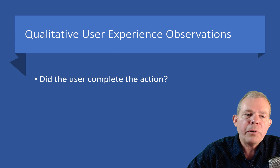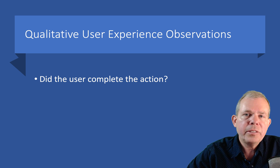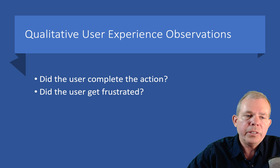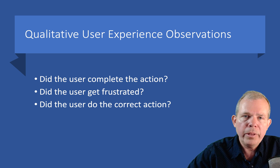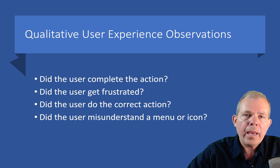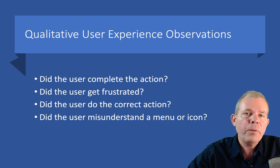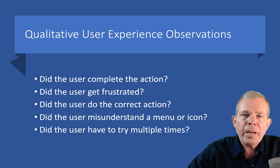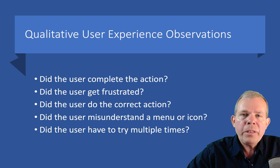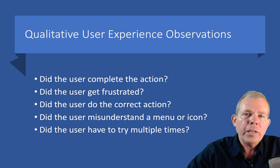Qualitative user experience testing involves watching what users do. Literally, you could put them in a lab or hand them a phone and just observe quietly. Did they complete the action without questions? Did they get frustrated or have to ask for help? Did the user do the correct action, or did a menu lead them down a false path? Did they misunderstand something — was the menu not clear, was it hidden, did they not even know it was a menu, or was the icon a mystery? Did they have to try multiple times before getting it right? If the answer to any of these comes out wrong, you either have to fix the app or assume a great deal of your customers will never come back.